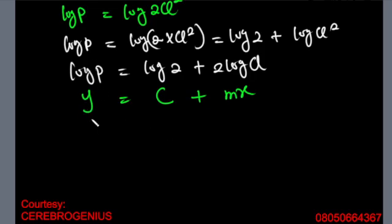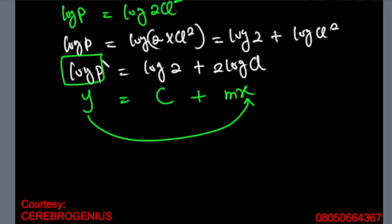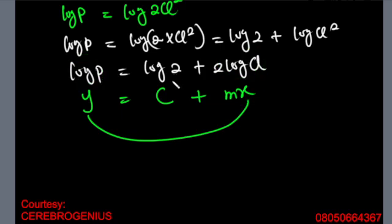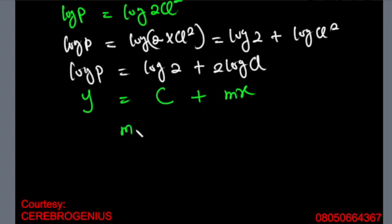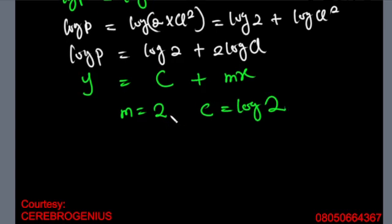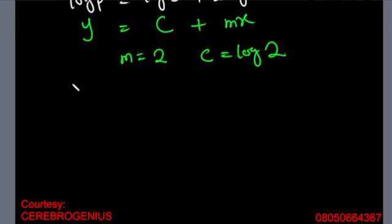Instead of plotting a graph of y against x, the variables are replaced by what you have here: log p and log q. So that means you are plotting the graph of log p against log q. Whatever is the coefficient of your x is going to be the slope, so your slope is going to be 2. Our slope is 2 and our intercept will be log 2.